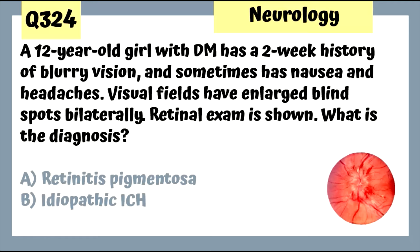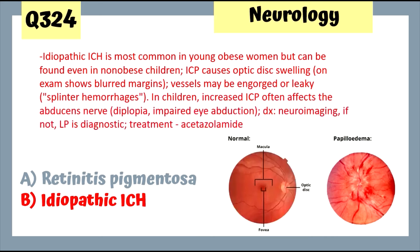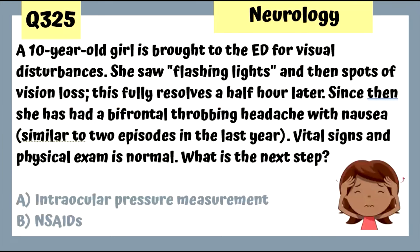Question 324: A 12-year-old girl with DM has blurry vision, nausea, headaches, and enlarged blind spots bilaterally with papilledema on retinal exam — this is idiopathic intracranial hypertension, most common in young obese women but can occur even in non-obese children. Get neuroimaging; lumbar puncture is diagnostic, and treatment is with acetazolamide.